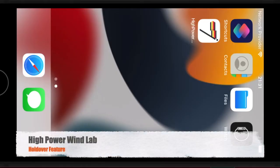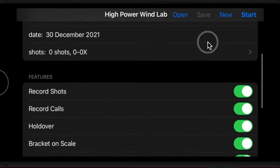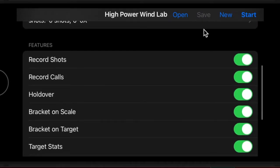The holdover feature is intended to be used by scoped rifle shooters who prefer to hold an aim point on the target versus dialing each correction. Before we get started, ensure the holdover feature is enabled on the main setup screen.